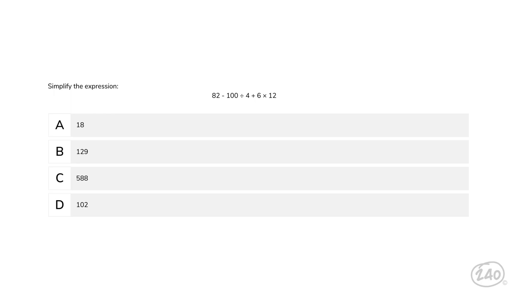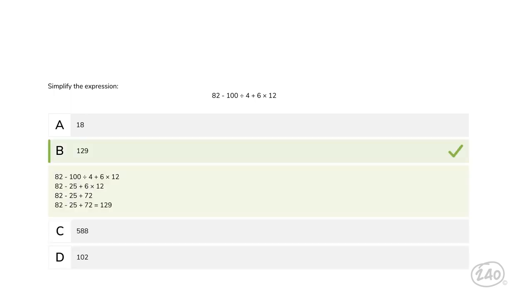So 100 divided by 4 equals 25, and 6 times 12 is 72. So now our expression is 82 minus 25 plus 72. Now we can simplify the remaining addition and subtraction from left to right. So our final answer is 129. Now like some other shows, here the points don't matter, but let's keep playing.